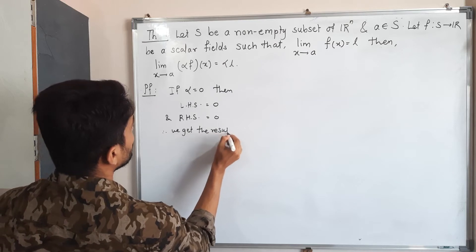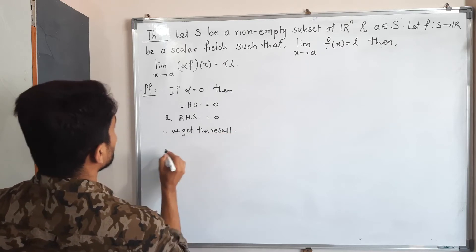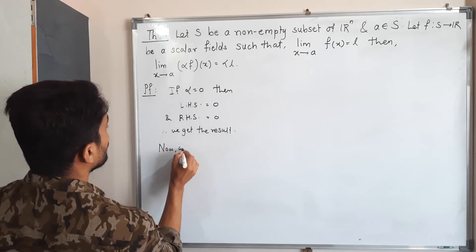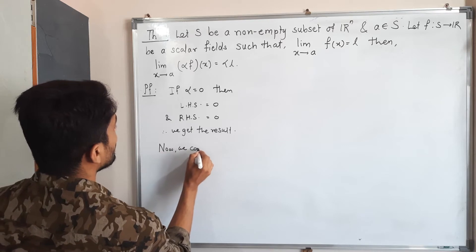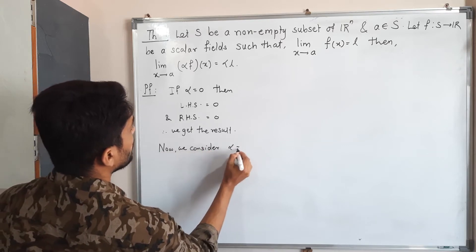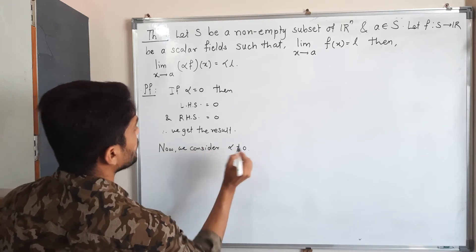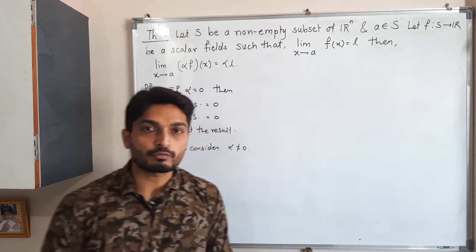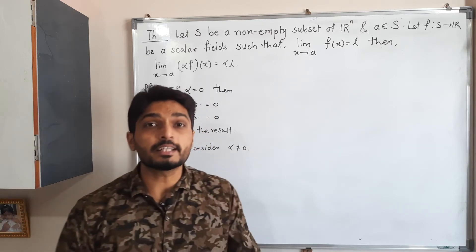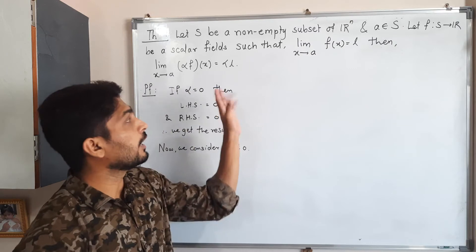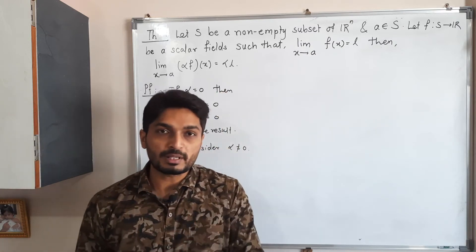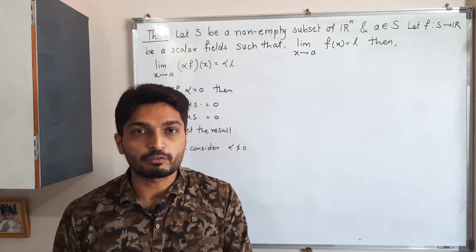Now we consider Case 2: alpha is not equal to zero. This is the main part of the proof. We use the epsilon-delta definition of the limit of a function.